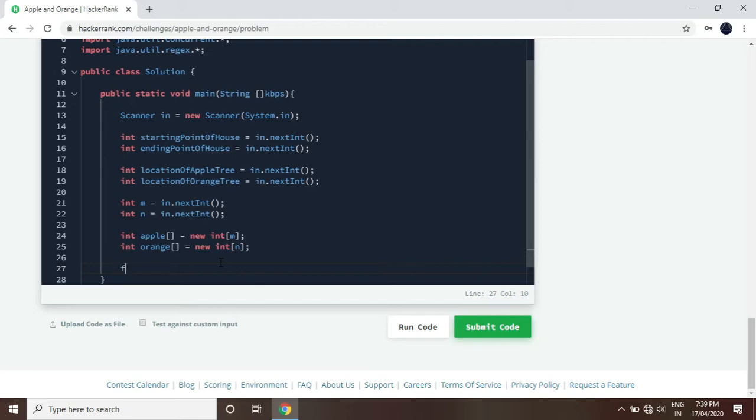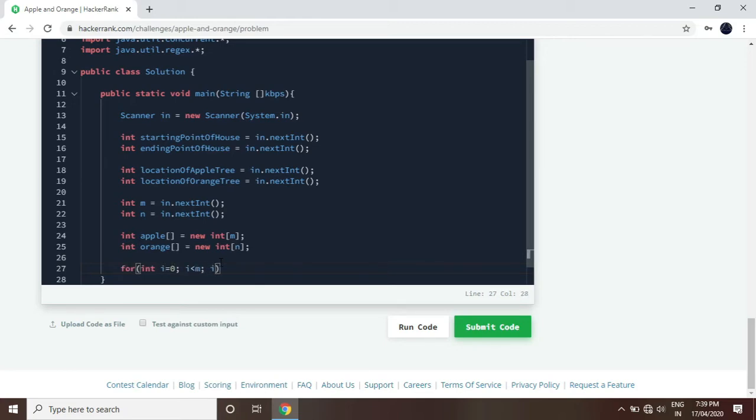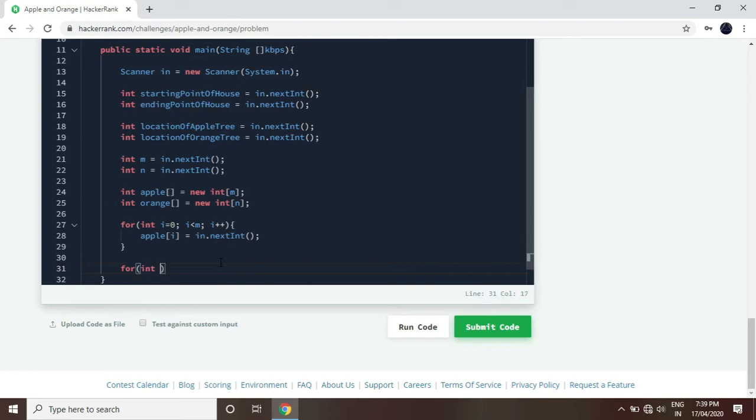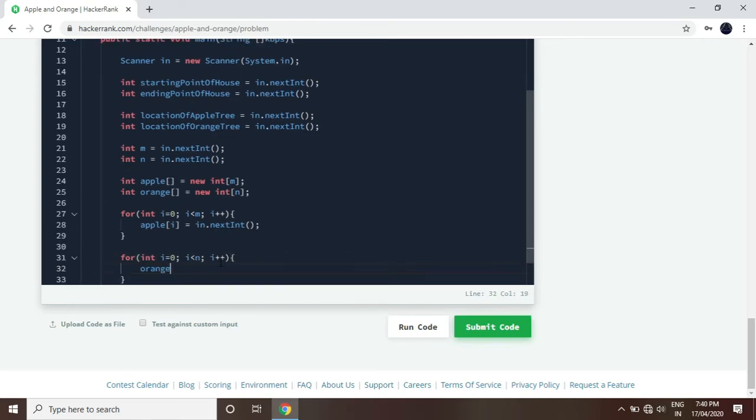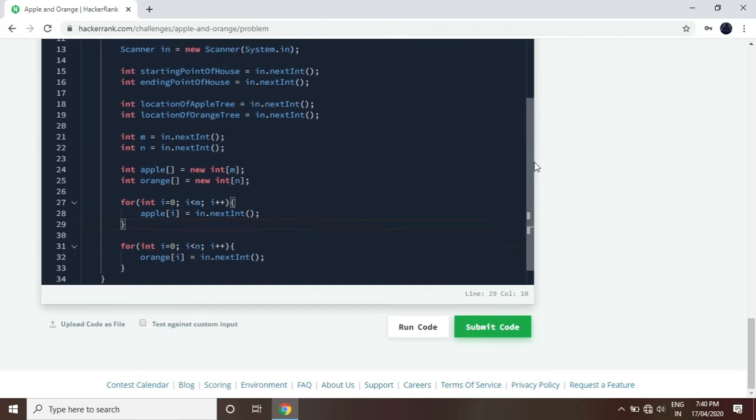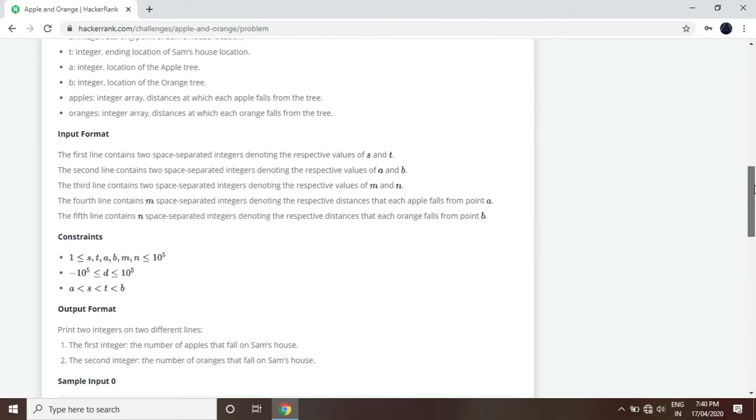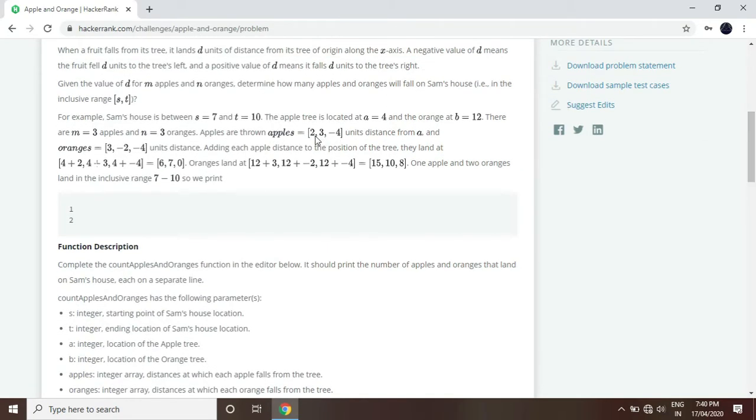Apple and orange arrays will be made here. Now I will take input. One time when we have input, our work is in case we have to add. What we need to add is apple array. This is the location of the tree, the location of the apple tree and the array of apple tree.